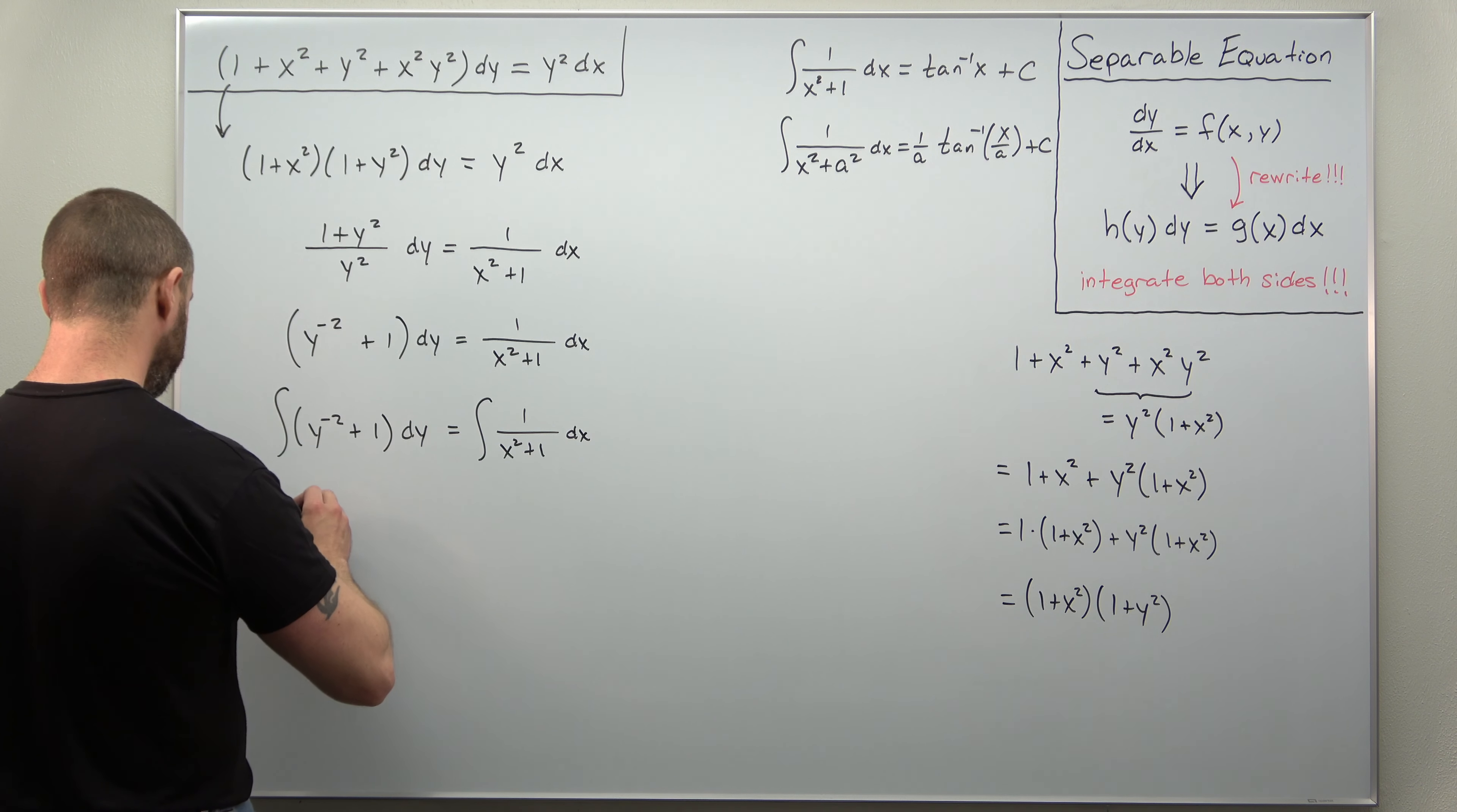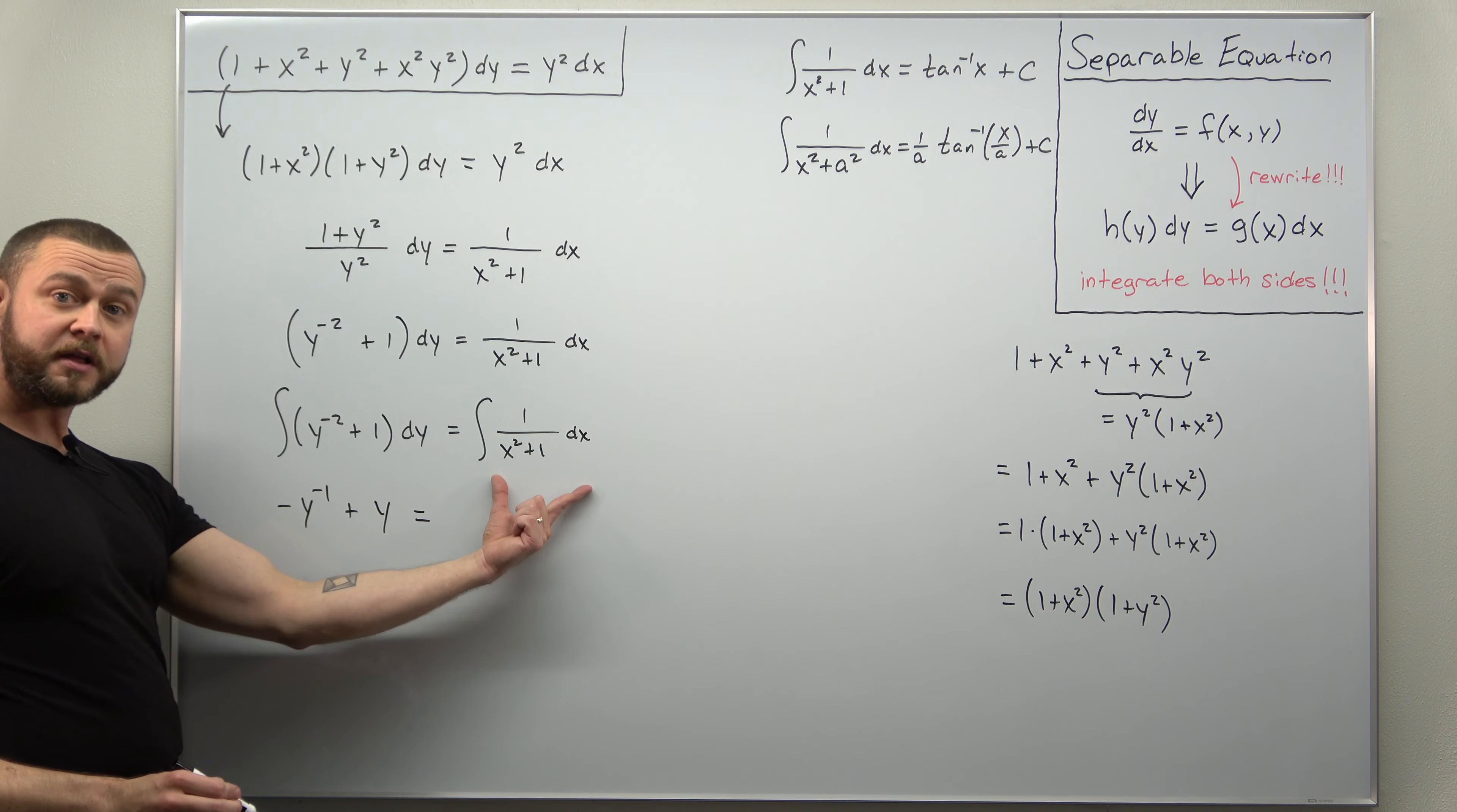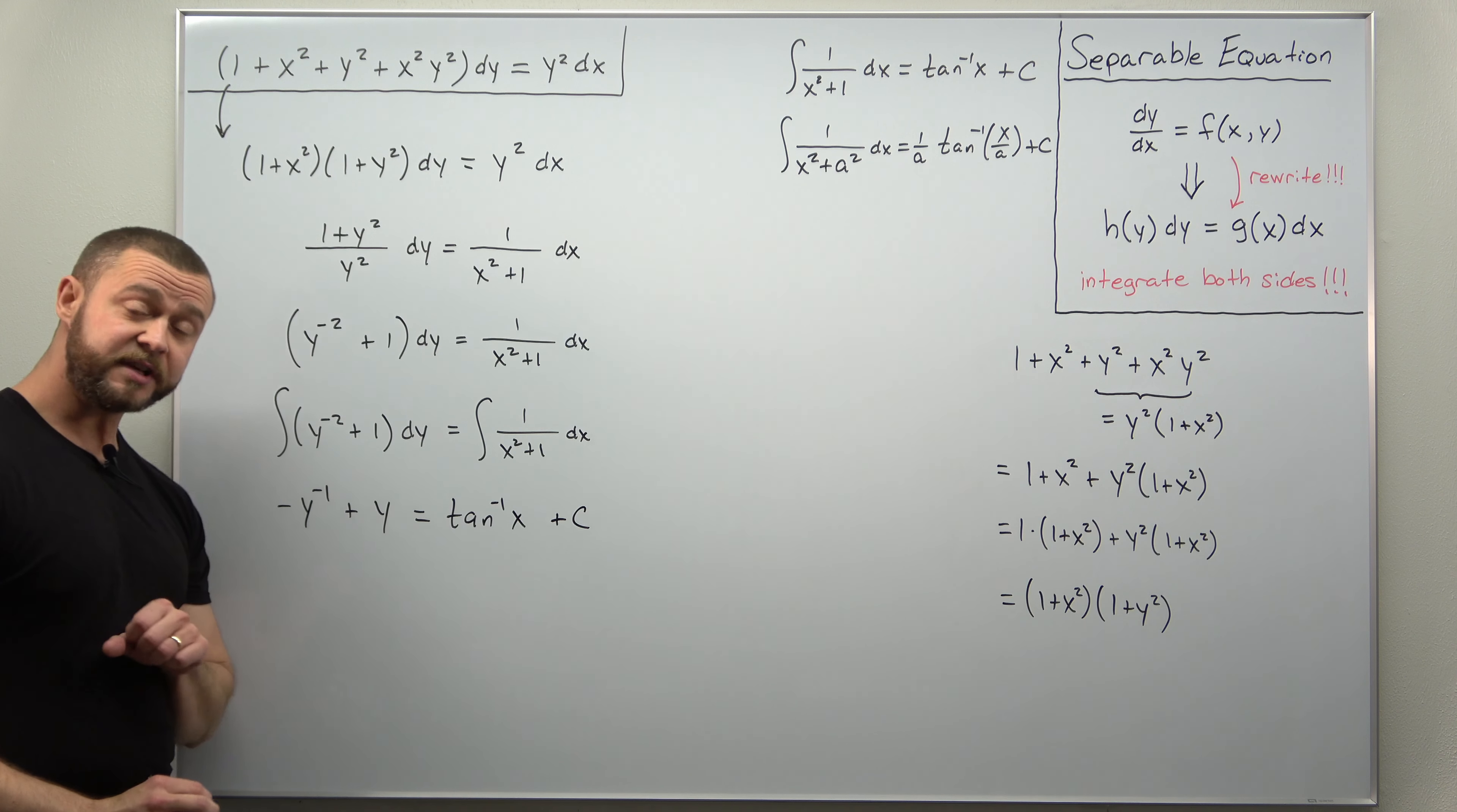All right, so let's go ahead and write it out. Apply the power rule to the first term: add 1 to the power and then divide by the new power. You should get negative y to the negative 1. The constant 1 just integrates to y. And when we integrate the right side, you're going to get inverse tangent of x plus c.